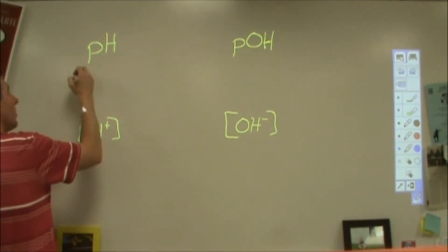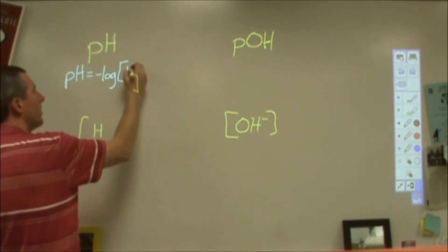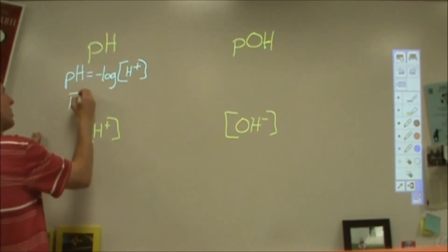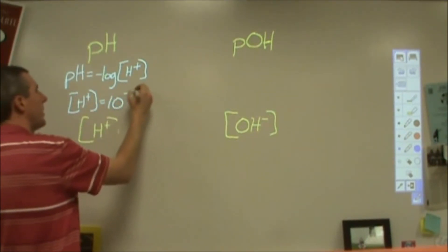To relate these two equations, we start with pH. Anytime you see a lowercase p, that's going to be negative log of that thing. So pH is going to be negative log of H⁺. To undo that, we would move the negative sign over and to undo the log you would do 10 to the power. So if I wish to know the H⁺ concentration, I would do 10 to the negative pH.